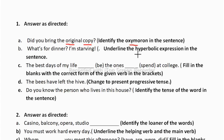The next part: 'What's for dinner? I am starving. — Underline the hyperbolic expression in the sentence.' Hyperbole is a figure of speech used to emphasize a point; we should not take its meaning literally. Here 'I am starving' is the hyperbolic expression, meaning someone is dying due to hunger — it emphasizes that the person is very hungry. No one will literally die of hunger, so 'I am starving' is your hyperbolic expression.